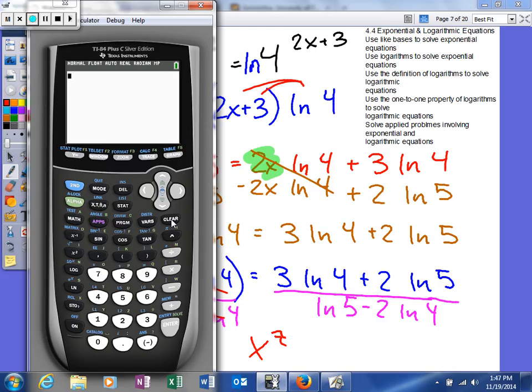So here's my calculator. All right, so now I'm kind of old school. So I don't try to type this whole thing in one line of text. So I'm just going to go ahead and type in my denominator first, believe it or not. Natural log of 5 minus 2 natural log of 4. Okay, so that should be what my denominator is. And now what I'm going to do is I'm going to divide it into my numerator.